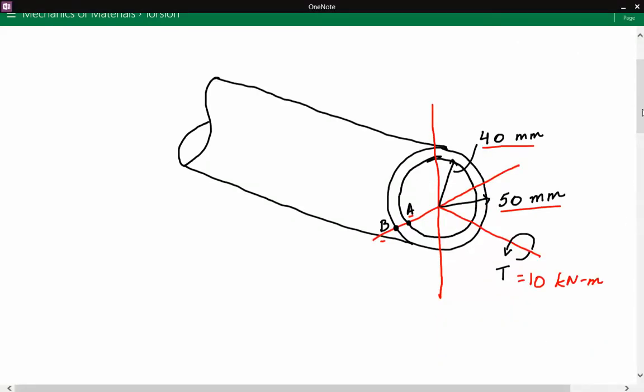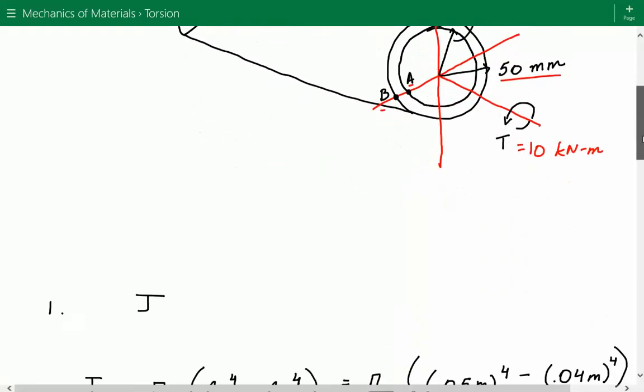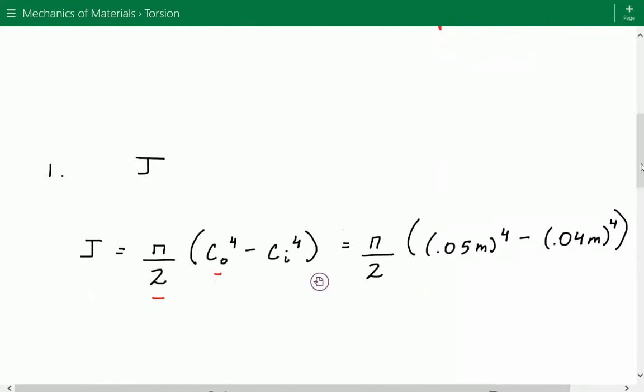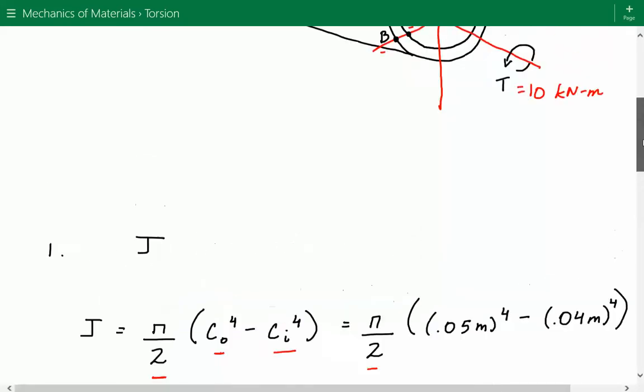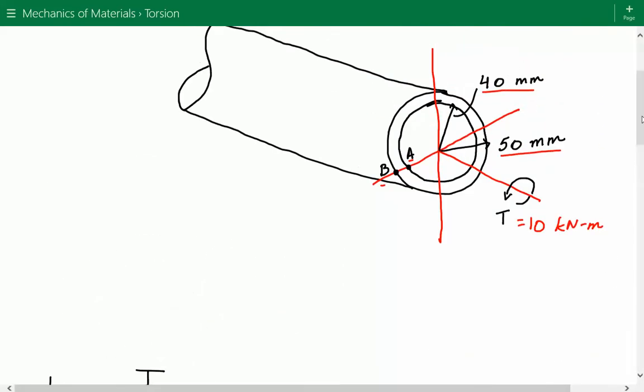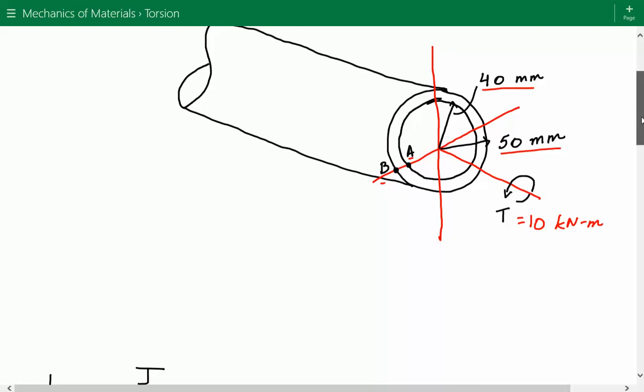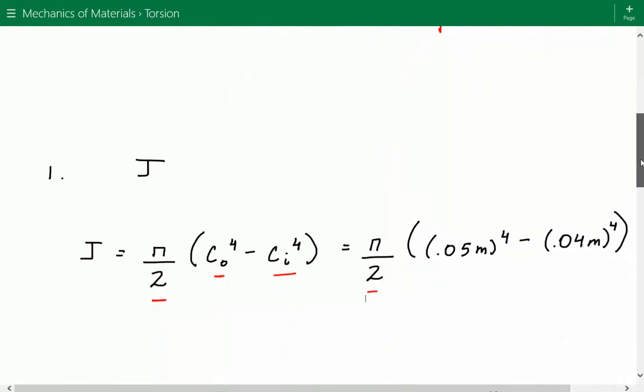The first thing we're going to do is calculate the polar moment of inertia which is denoted by J. J equals π/2 times the outer radius to the 4th power minus the inner radius to the 4th power. That comes out to be π/2, and the outer radius and inner radius are 50 mm and 40 mm, which is 0.05 m and 0.04 m.